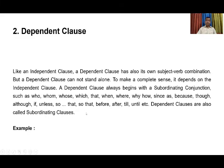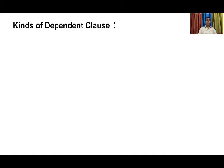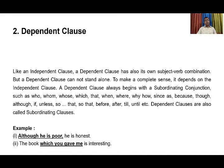Now we can see some examples. Look at the first example: 'Although he is poor, he is honest.' This sentence has two parts. The first part, 'although he is poor', has a subordinating conjunction 'although' at the very beginning. Can it make a complete sense on its own? Obviously not. To complete the sense, we have to include the rest of the sentence, 'he is honest.' So 'although he is poor' is an example of a dependent clause.